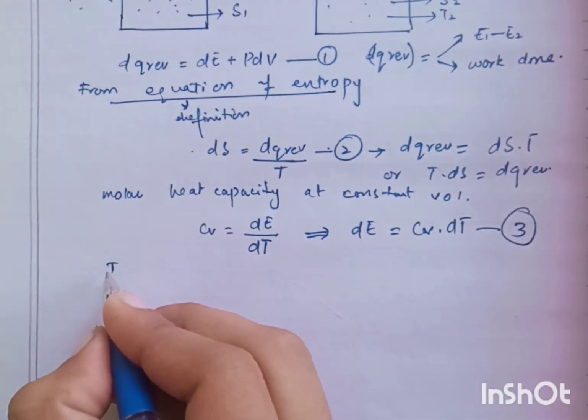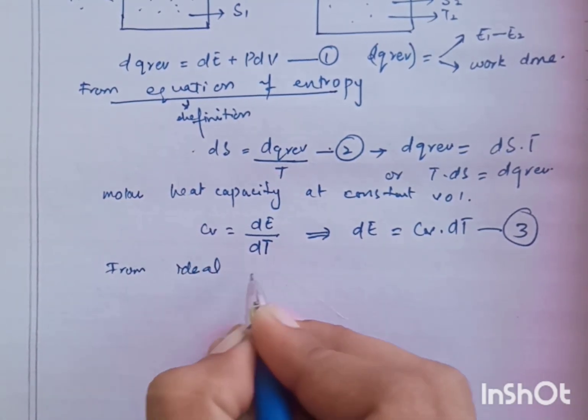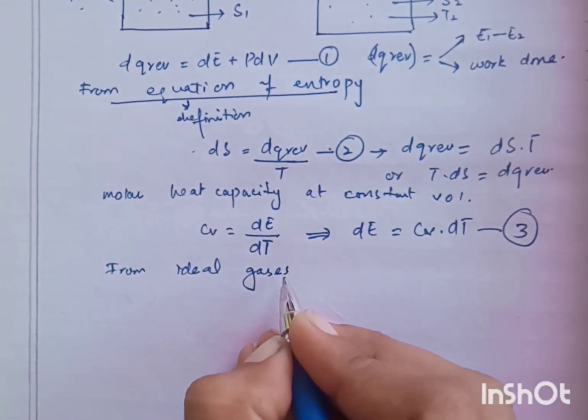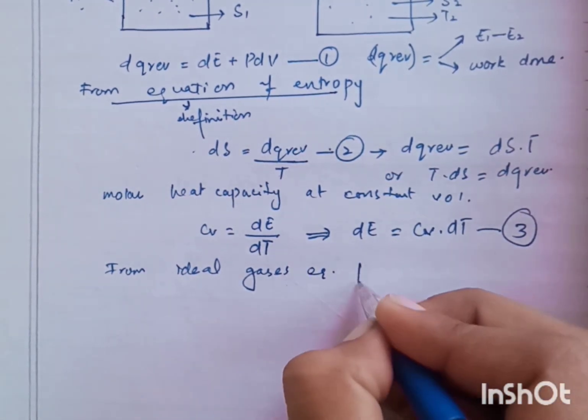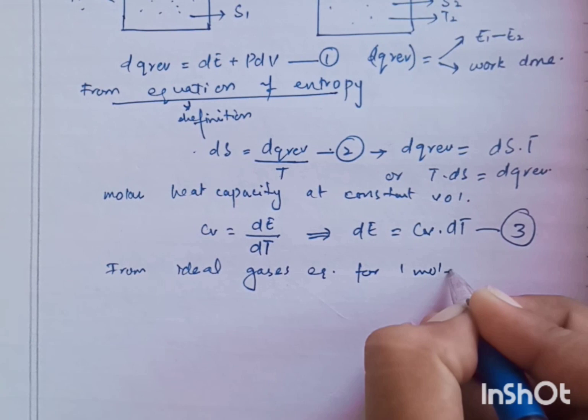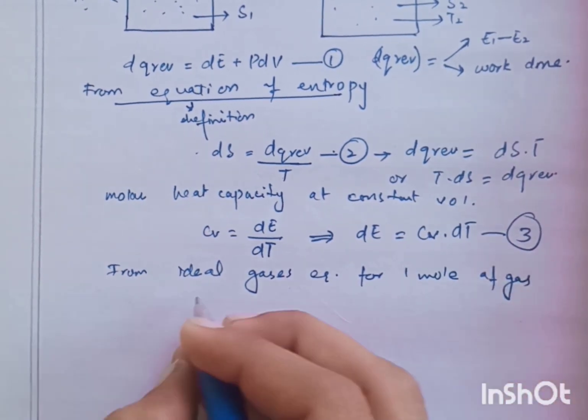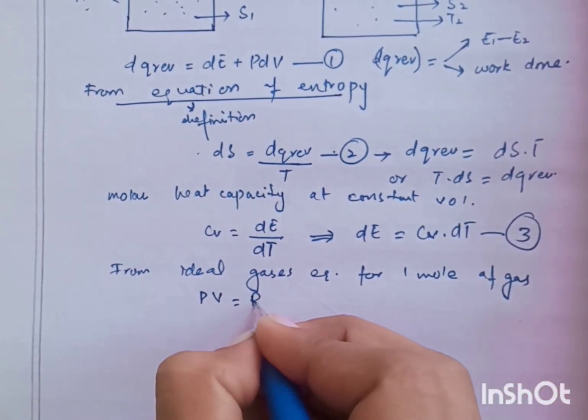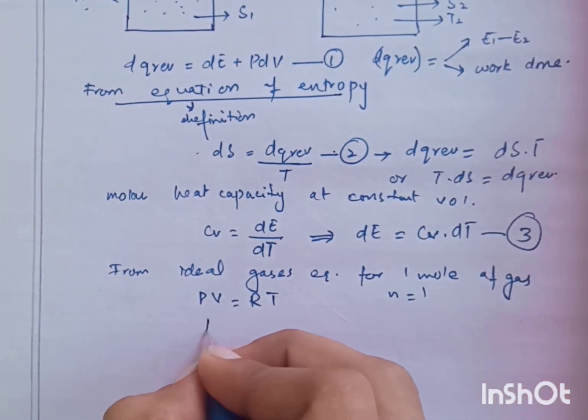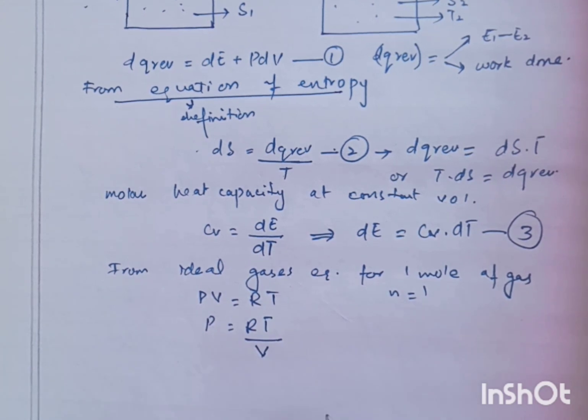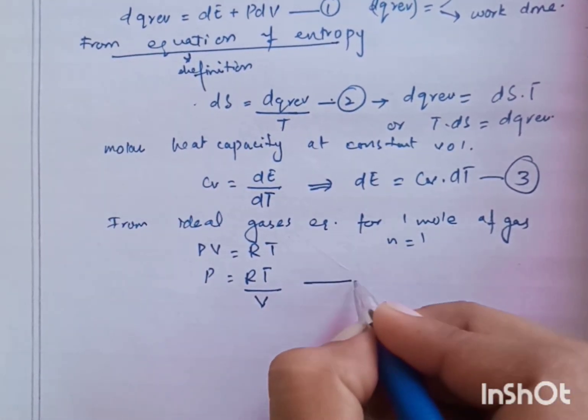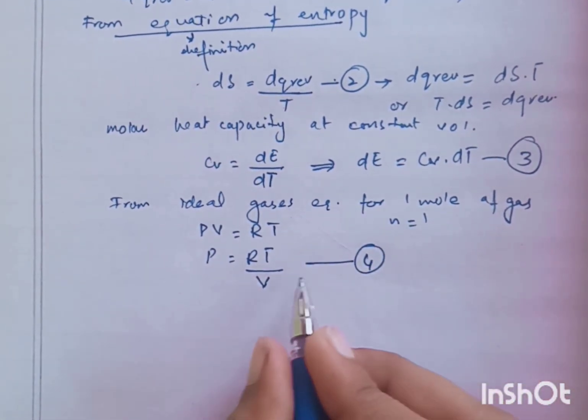From ideal gas equation, because we are discussing about the ideal gases. From ideal gases equation for 1 mole of gas, then PV equals to RT because N equals to 1. P equals to RT, V is brought to the right side. This is equation number 4.